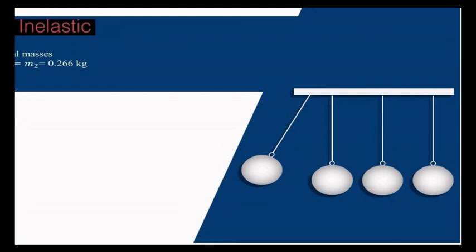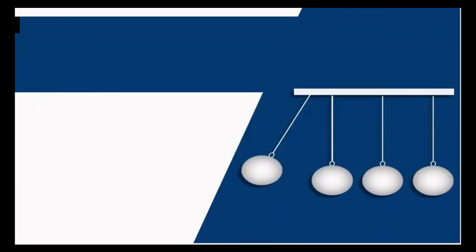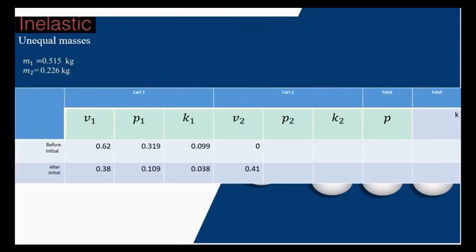Inelastic data collection with equal masses. Now fill in the blank. Inelastic with unequal masses: M1 equals 0.515 kilograms, M2 equals 0.225 kilograms. Now fill in the blank for this case.